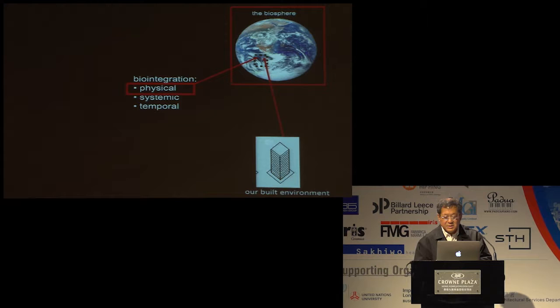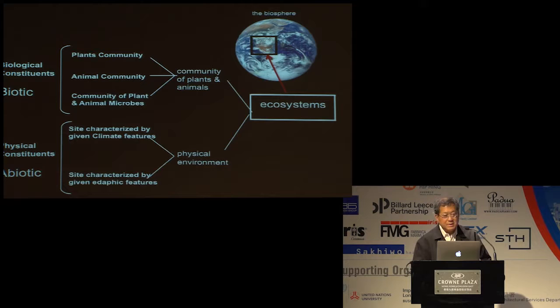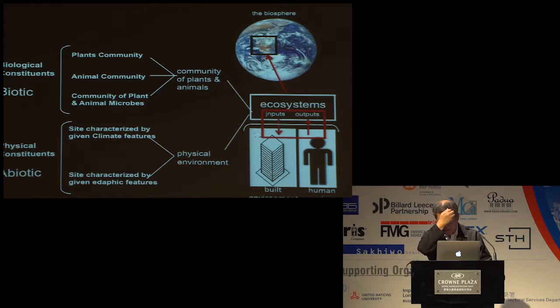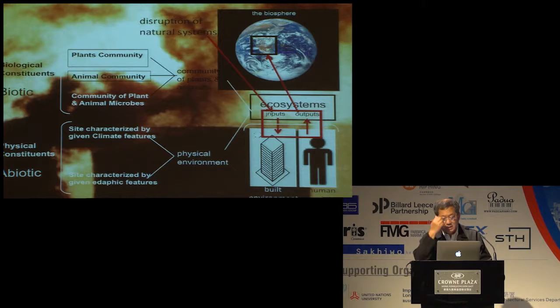Ecologists see the biosphere as consisting of units called ecosystems — communities of plants and animals and the physical environment. As defined by ecologists, it's the biotic constituents and the abiotic constituents acting together to form a whole. It's this holistic property that differentiates an organism from a machine. We as human beings, although we're part of nature, are immensely powerful — we're able to change the landscape, we need to change climate, use inputs of energy resources and fossil fuels, and we emit rubbish into the air. This is the disruption of natural systems, the failure of biointegration between what we do and the natural environment.